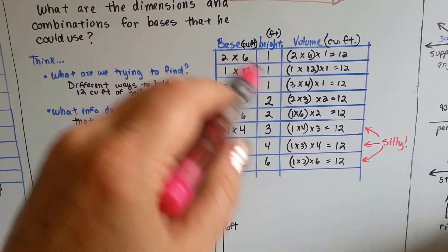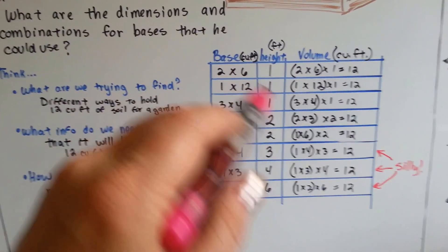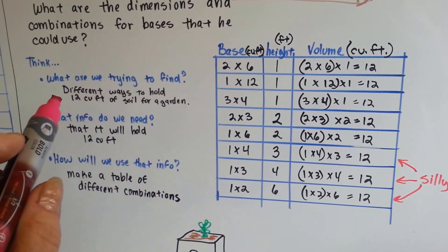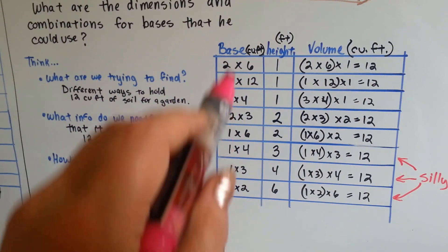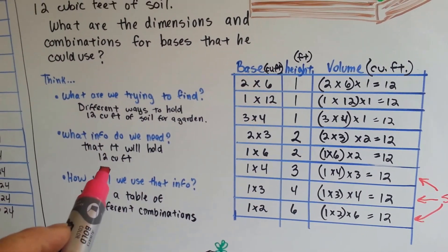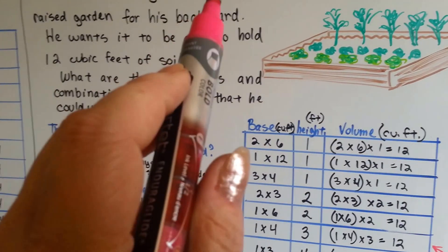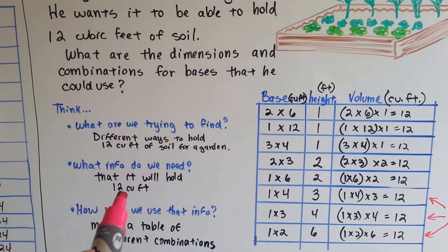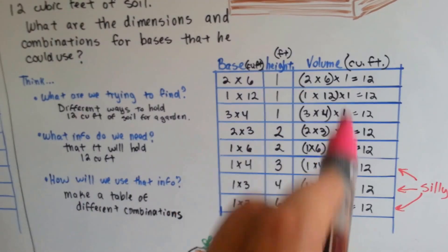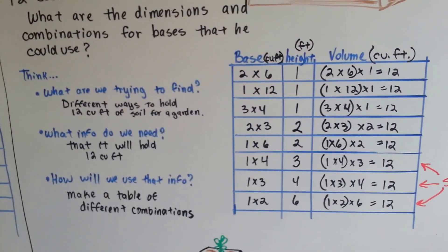So he's probably better off with one of these up here where the height is lower. So he thinks of the different ways that he could do the base, all the different configurations. And he figures that he needs the information that he wants it to be rectangular and that he wants it to hold 12 cubic feet of soil. So he's going to use this table to make all his different configuration choices.